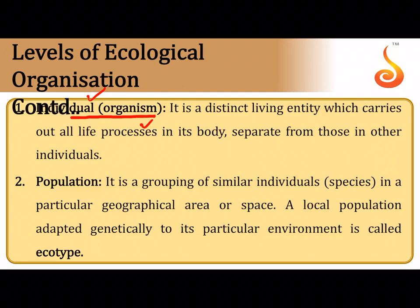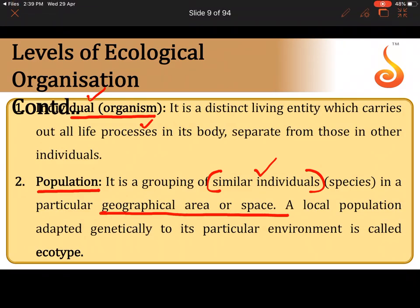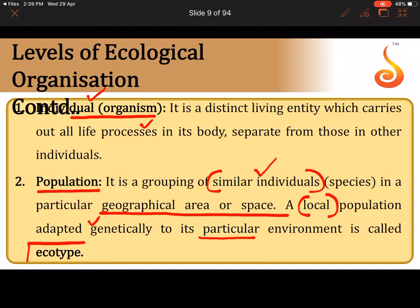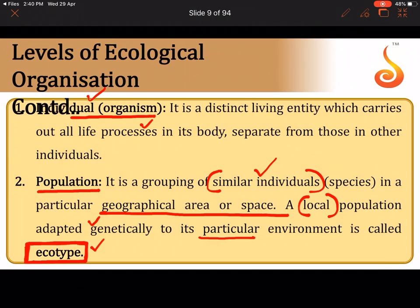An individual groups itself into a population — a group of similar individuals that occupy a particular geographical area or space. Within a population, there are local variations seen over a small range. Local populations that are genetically adapted to a specific environment are referred to as ecotypes. For example, a group of plants growing at the foothills of a mountain may exhibit specific genetic changes because the environment there differs from higher up the mountain.